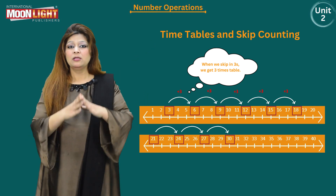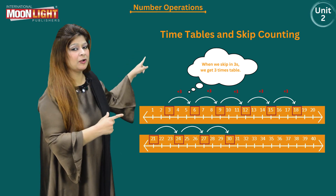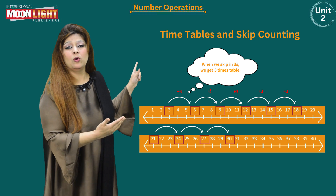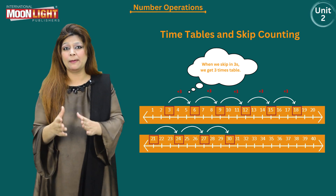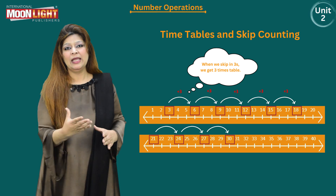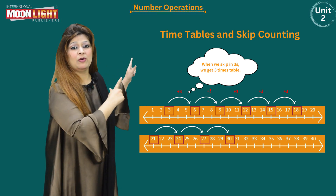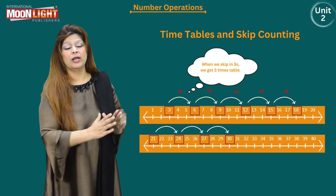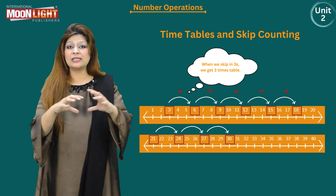The third jump — adding three again — gives three multiplied by three, which is nine. The fourth jump lands on 12, the fifth jump on 15, the sixth jump on 18, and the seventh jump on 21.